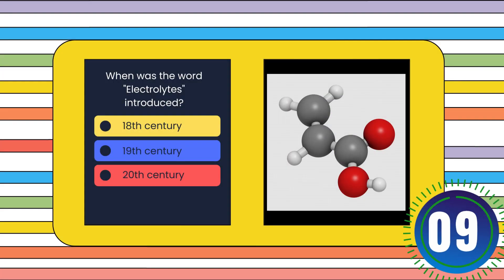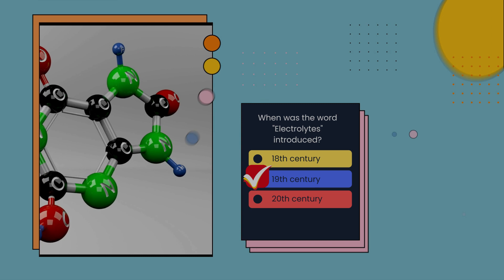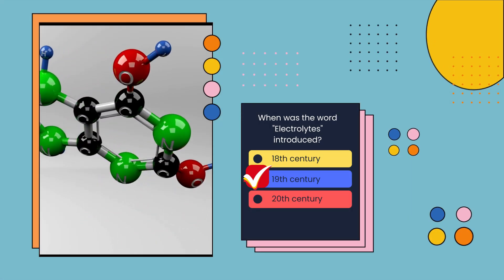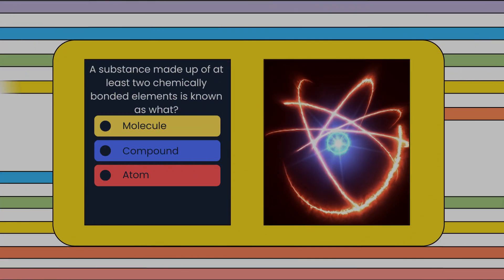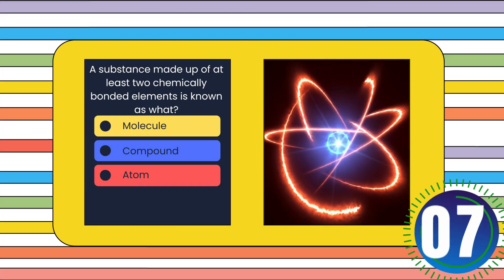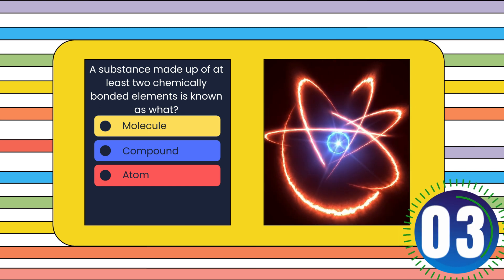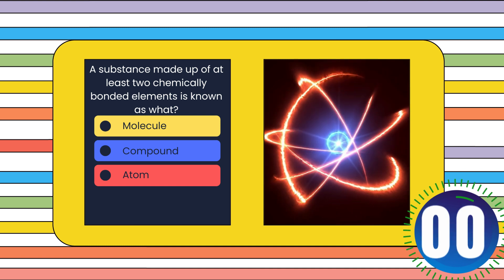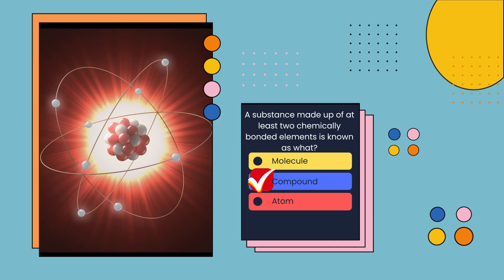When was the word electrolysis introduced? 18th century, 19th century, or 20th century? 19th century. A substance made up of at least two chemically bonded elements is known as what? Molecule, compound, or atom? Compound.